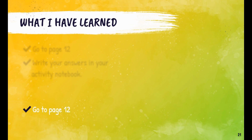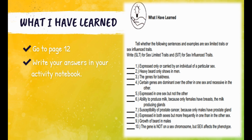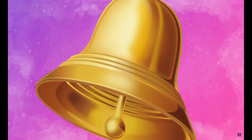Did you learn something? Go to page 12 and answer the items in 'What I've Learned.' Tell whether the following sentences and examples are sex-limited traits or sex-influenced traits. Write SLT for sex-limited traits and SIT for sex-influenced traits. For example, number 1: 'Expressed only or carried by an individual of a particular sex' — the correct answer is sex-limited traits, or SLT. Are you ready to answer the rest? Let's go!